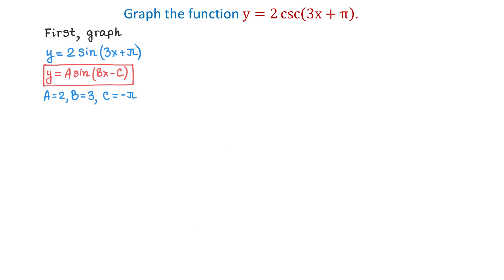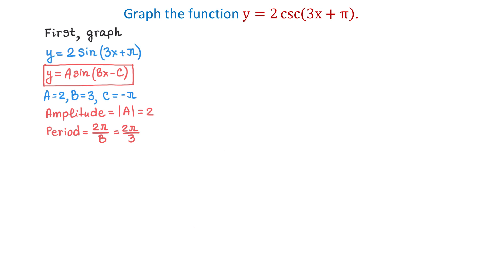To graph this function, first we need to find the amplitude, the period, and the phase shift. The amplitude is found by taking the absolute value of a, and the absolute value of 2 is 2. This tells us that the maximum value of the function will be 2 and the minimum value will be negative 2. The period is found using the formula 2 pi divided by b; replacing b with 3 gives a period of 2 pi over 3, meaning the function will complete one cycle over this period.